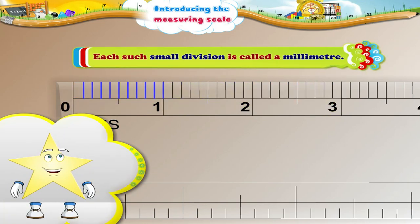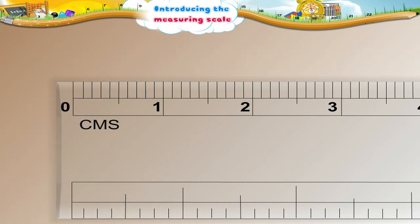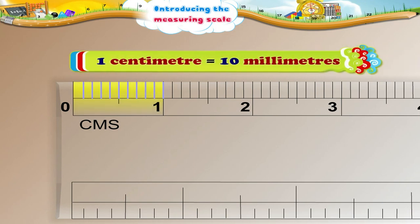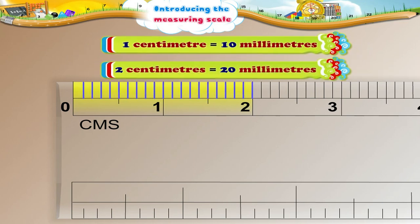Each such small division is called a millimeter. So we can see that 1 centimeter has 10 millimeters. Now, if we have 2 centimeters, there will be 20 such small divisions. So 2 centimeters will have 20 millimeters.